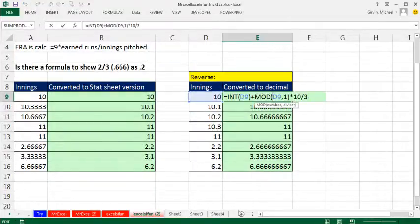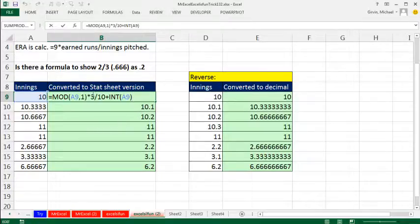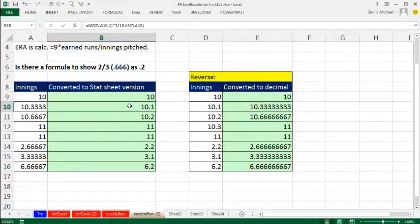That formula right there is the formula I was going to use to go from the 0.1, 0.2 to the decimal. However, for the decimal to the 0.1, 0.2, that long formula Mr. Excel does, basically we're going to do the same formula here, but instead of multiplying by 10 and dividing by 3, just multiply by 3 and divide by 10, so that will work. But I'm never going to use these formulas again.